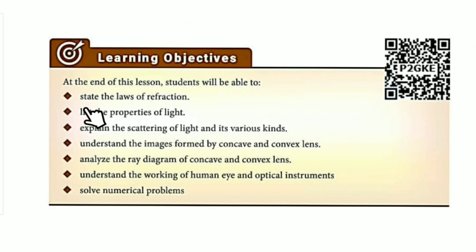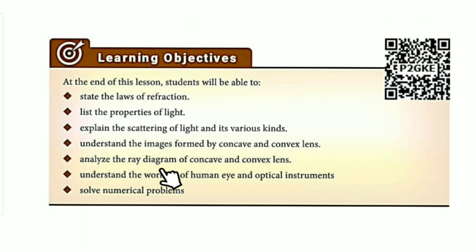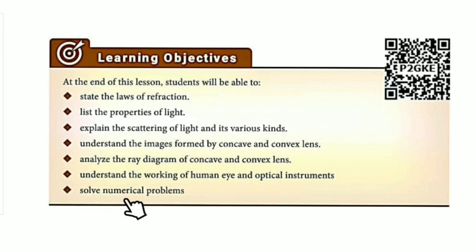The learning objectives for this lesson are: state the laws of refraction; list the properties of light; explain the scattering of light and its various kinds; understand the images formed by concave and convex lenses; analyze the ray diagrams of concave and convex lenses; understand the working of the human eye; optical instruments; and solve numerical problems.